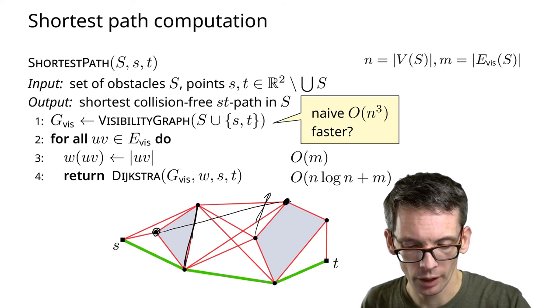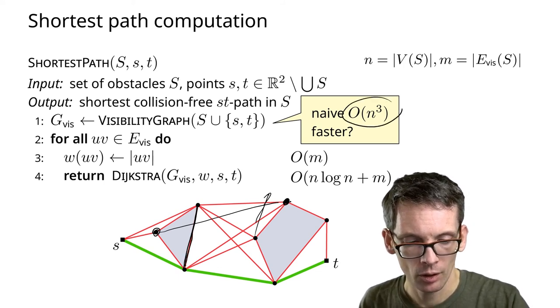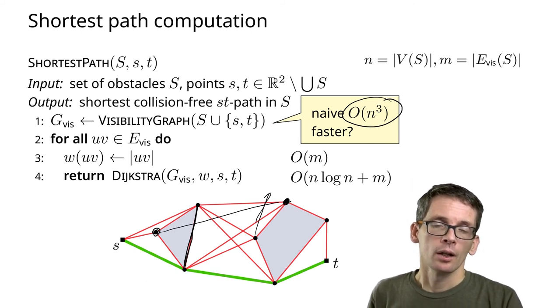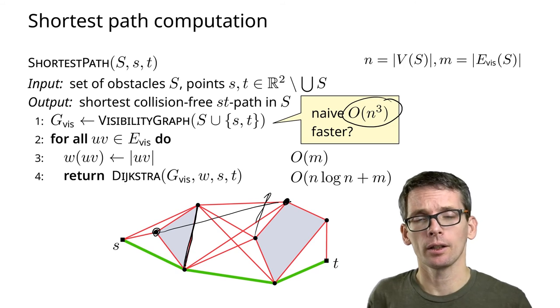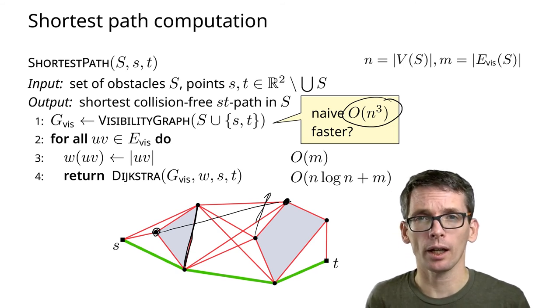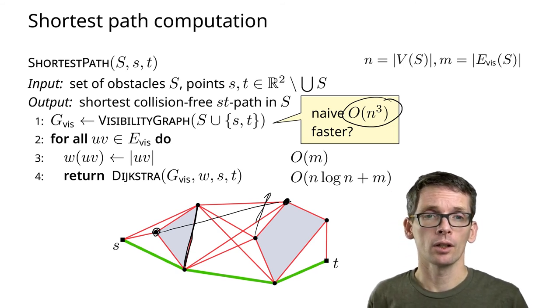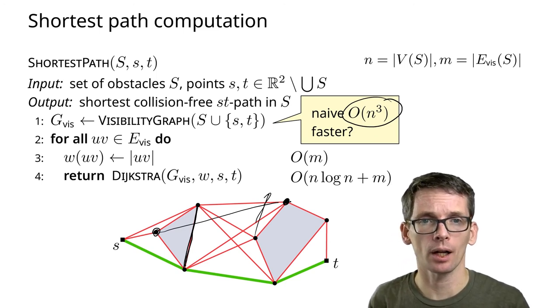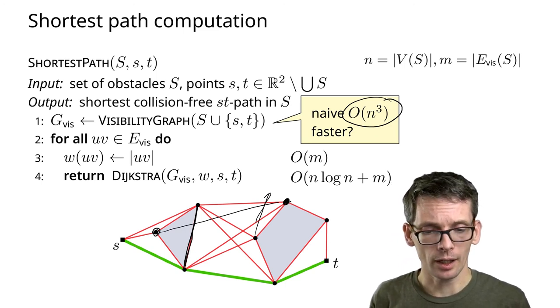I'm taking n² pairs, checking it with n edges, so naively I would take n³ time. We can do this faster, and we can do that with a fairly easy sweep line algorithm.